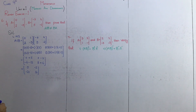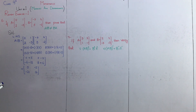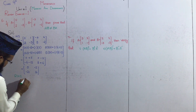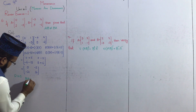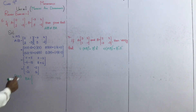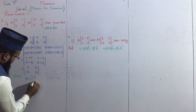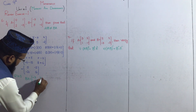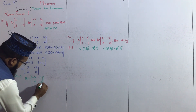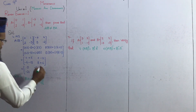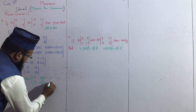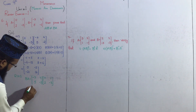Yeh humne left hand side ko solve kar diya. Ab hum right hand side ko solve karayenge. Right hand side hamare paas kya hai — BA. Ab hum B matrix likhenge: B matrix hamare paas minus 3, 5 first column; second column 4 aur minus 2. Aur A matrix mein given hai: first column 0, 2; second column 1 aur minus 3. Ab in dono matrix ko multiply karenge.